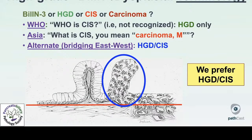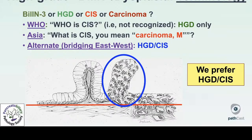In terms of terminology, WHO does not like the term 'carcinoma in situ' in the GI tract for fear of causing overtreatment — they advocate using 'high-grade dysplasia' instead. However, in Asia and South America, the term carcinoma is commonly used for high-grade dysplastic lesions, even called 'M carcinoma' (mucosal-type carcinoma). There's a big gap that we try to bridge by using terms parenthetically — 'high-grade dysplasia/CIS.' So whenever I make a diagnosis of high-grade dysplasia, I also note parenthetically that I'm referring to this carcinoma in situ-type process.